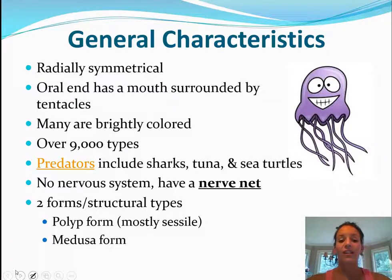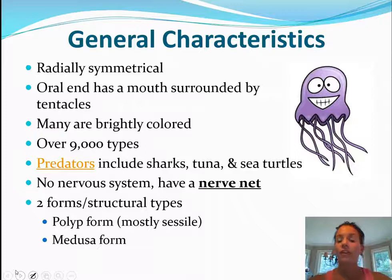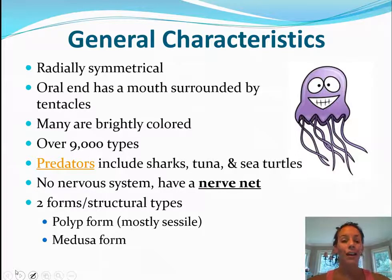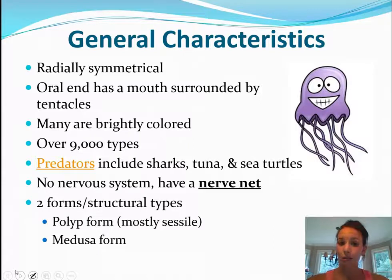Their predators are things like sharks, tuna, and even sea turtles. They don't have a nervous system like we do — they do have a nerve net though. They have two forms: the polyp form, which is mostly sessile meaning it doesn't move, and then the medusa form.